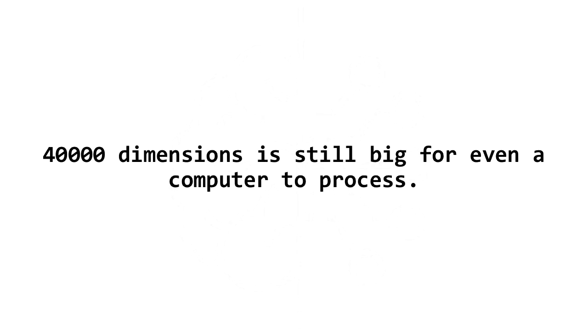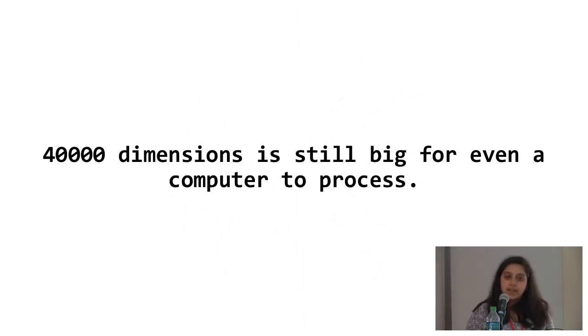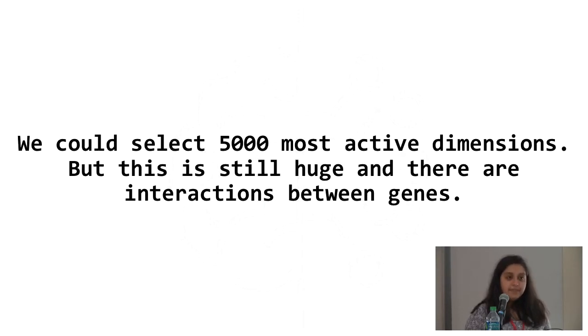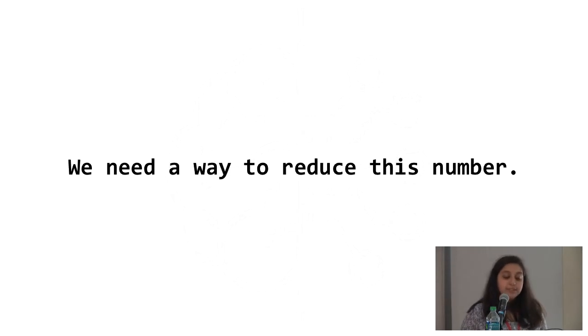But 40,000 dimensions, or those 40,000 genes that are active in the body, is still really large for a computer to process and for a computer to work with. So instead, we could try to select 5,000 of the most active genes or the most active dimensions, but this is still really big, and there are interactions between these genes. When you have a doctor and a patient, you really need to get it into some kind of format that a doctor can understand and interpret, and 5,000 genes is still really big for that. So we need to find a way to reduce this number.